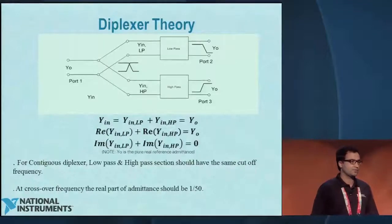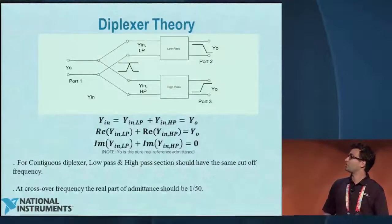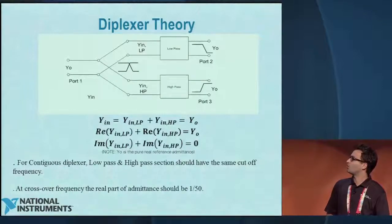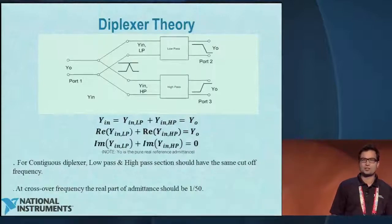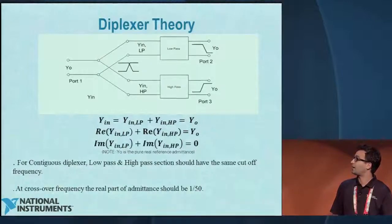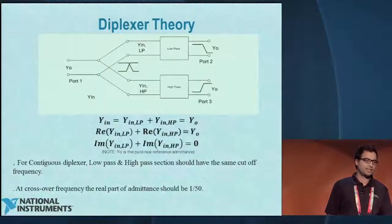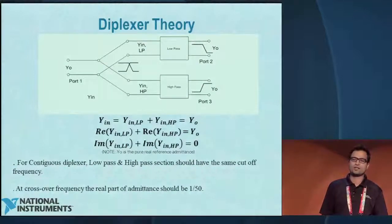What is a diplexer? A diplexer is basically nothing more than a low-pass and high-pass structure connected at one port, which discriminates the signal based on the frequency of the input. I'm going to talk about the contiguous diplexer, which has a low-pass and high-pass structure with the same cutoff frequency. It's very important that at the crossover frequency, we ensure the admittance is 1 over 50.